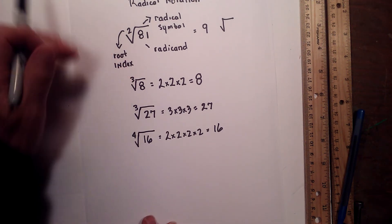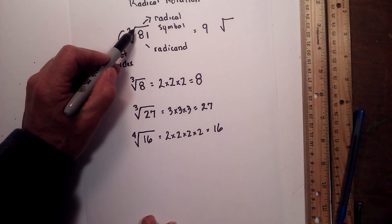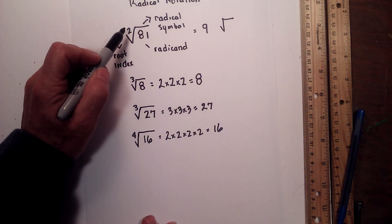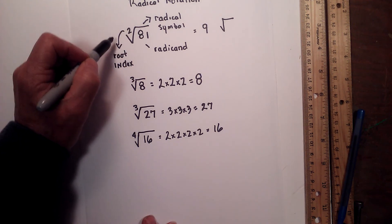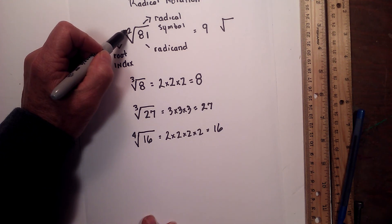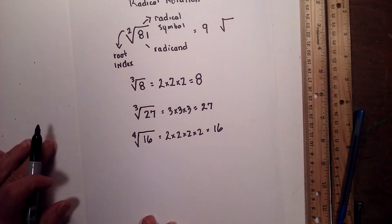In summary, the radical symbol tells you that you're going to find a root. The number inside is called the root index, and that is how many times the number multiplied by itself will equal the radicand.